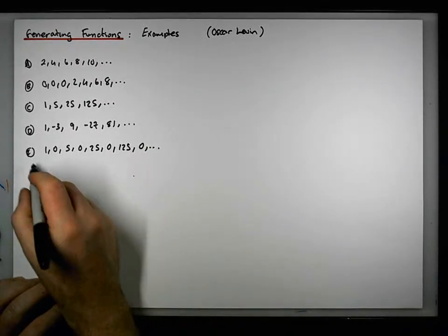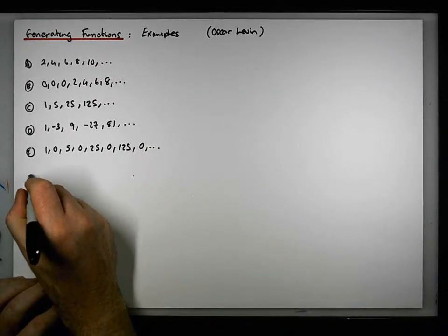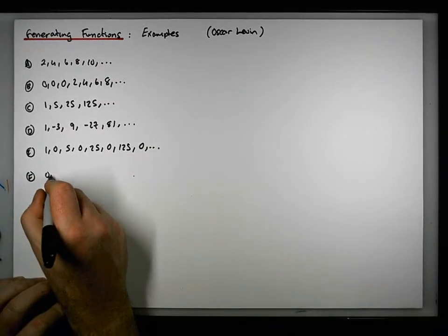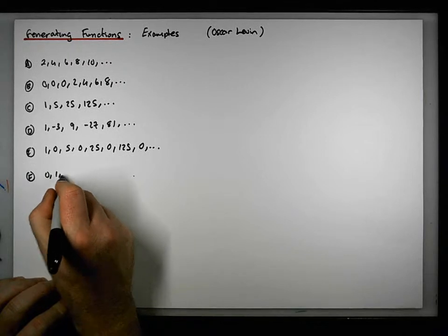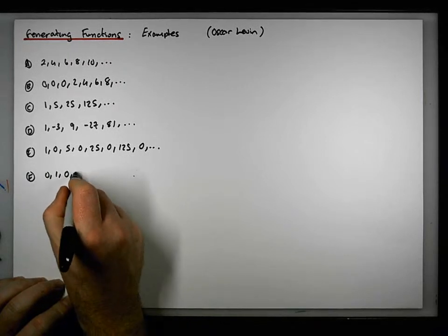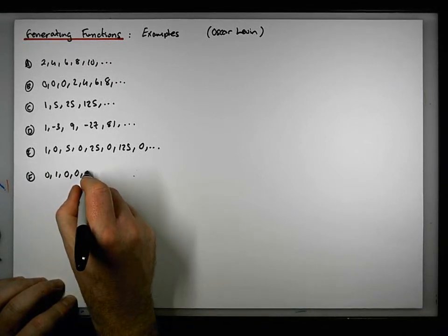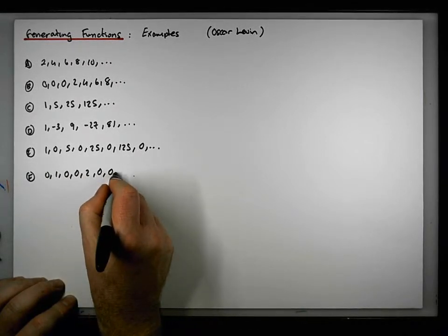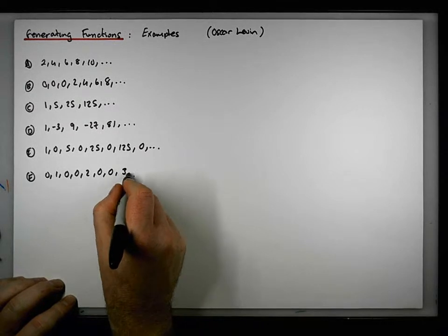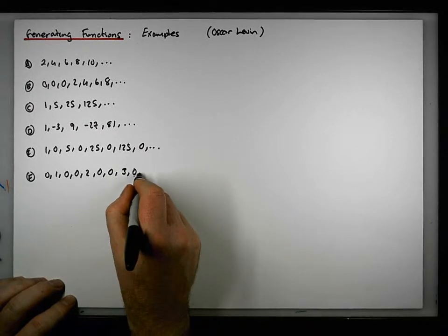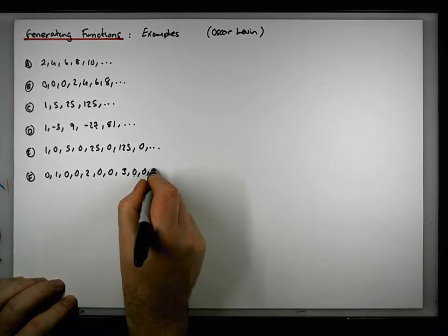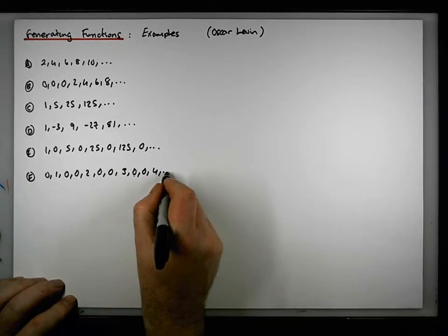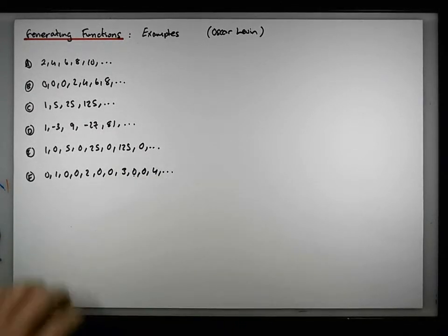And F is the sequence 0, 1, 0, 0, 2, 0, 0, 3, 0, 0, 4, and so on — the natural numbers with two zeros between each term and shifted one place to the right.